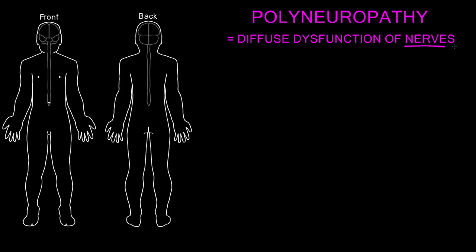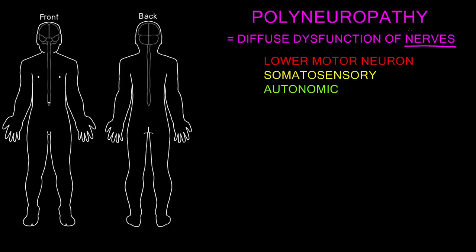Since the nerves carry axons of lower motor neurons, somatosensory neurons, and autonomic neurons, the kind of abnormalities we can see with polyneuropathy involve those functions. Polyneuropathy may cause diffuse lower motor neuron abnormalities, somatosensory abnormalities, and/or autonomic abnormalities.